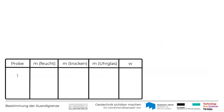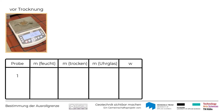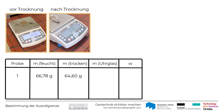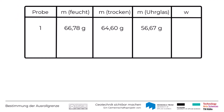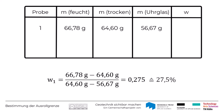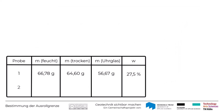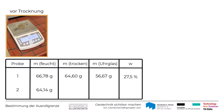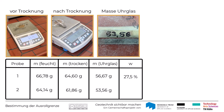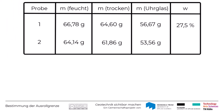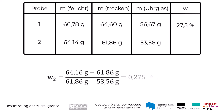Schauen wir uns die Ergebnisse der Probe 1 einmal konkret an. Vor dem Trocknen betrug die Feuchtmasse der Probe 66,78 Gramm, nach dem Trocknen nur noch 64,6 Gramm. Die Masse des Urglas-Schälchens beträgt 56,67 Gramm. Insofern ergibt sich hier ein Wassergehalt der ersten Probe von 27,5 Prozent. Für die zweite Probe ergab sich eine Feuchtmasse von 64,14 Gramm, eine Trockenmasse von 61,86 Gramm und die Masse des Urglas-Schälchens betrug 53,56 Gramm. Der Wassergehalt W2 berechnet sich ebenfalls zu 27,5 Prozent.